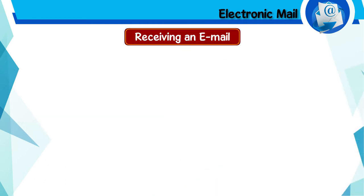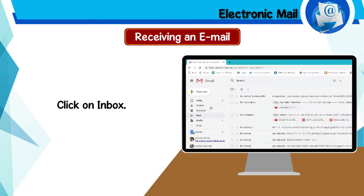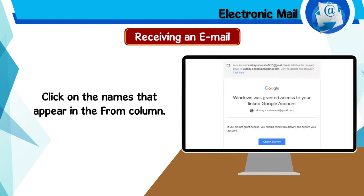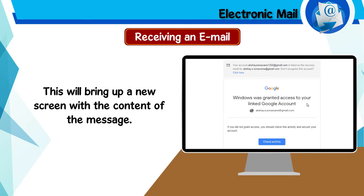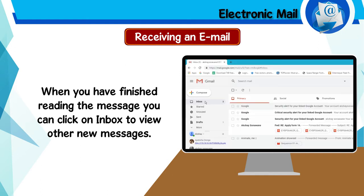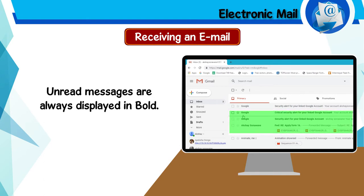Receiving an e-mail: Click on Inbox to read your new messages. Click on the names that appear in the 'From' column. This will bring up a new screen with the content of the message. When you have finished reading the message, you can click on Inbox to view other new messages. Unread messages are always displayed in bold.